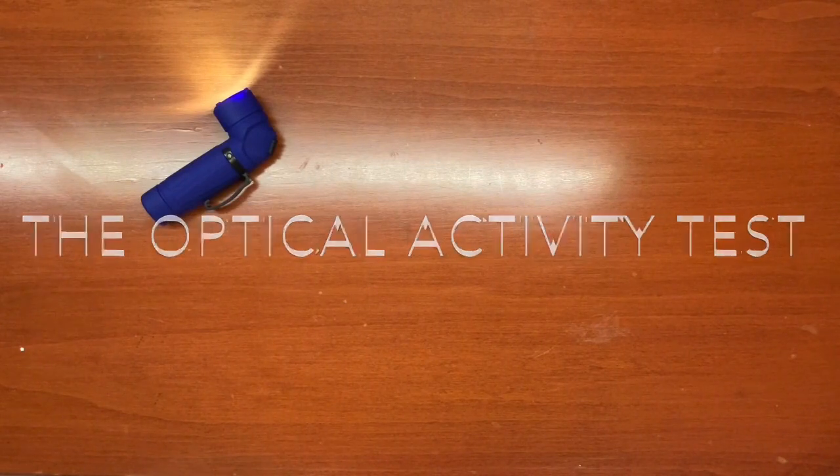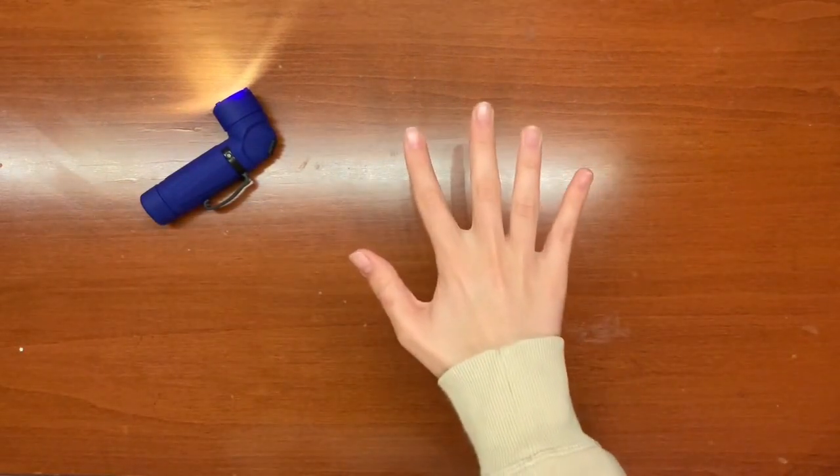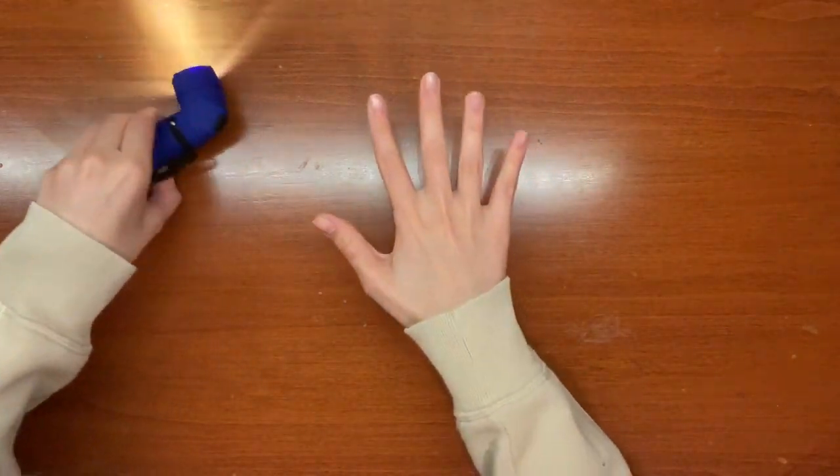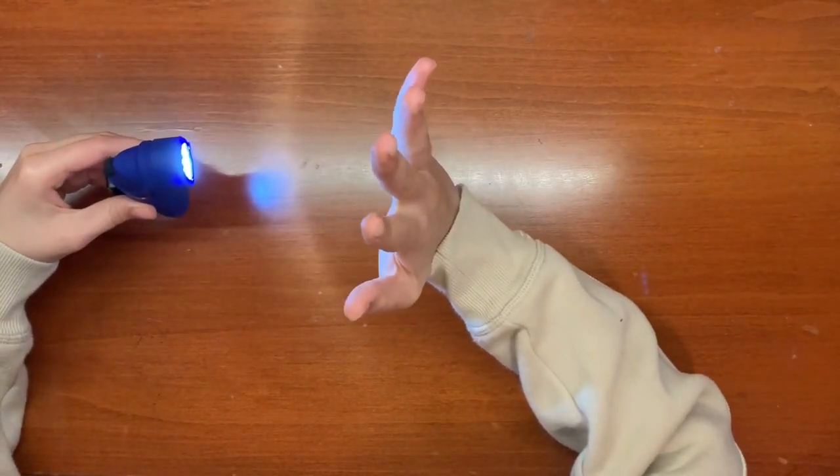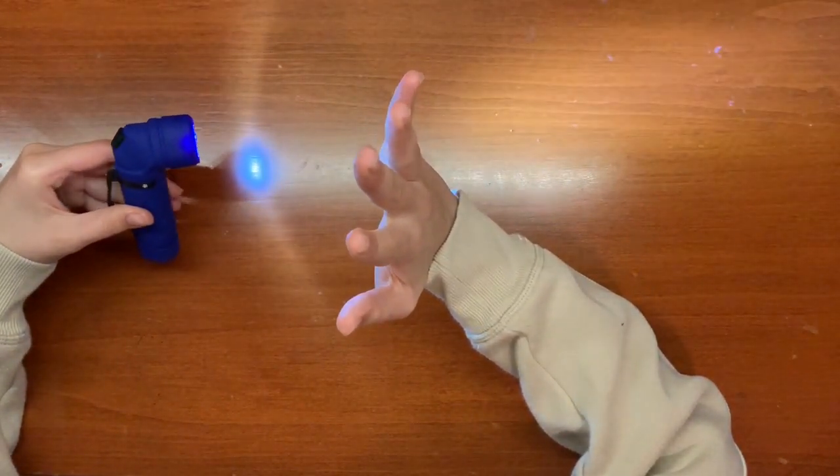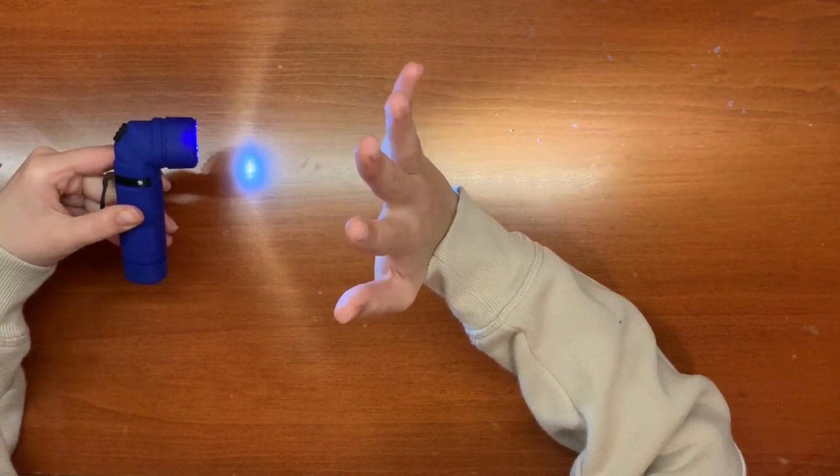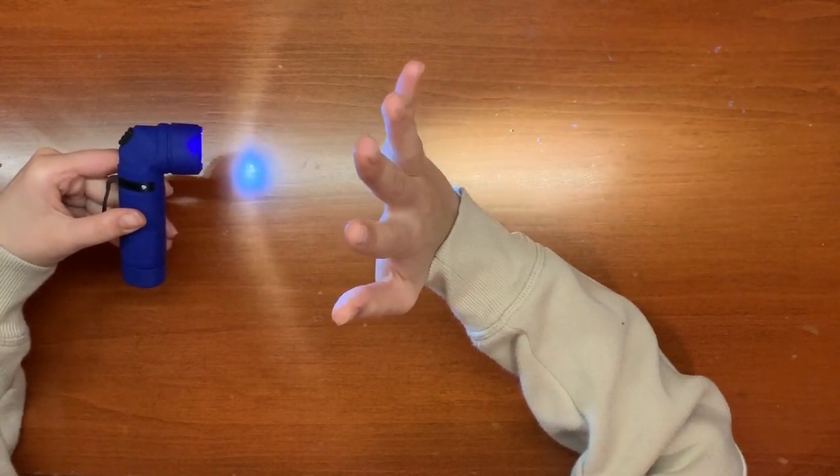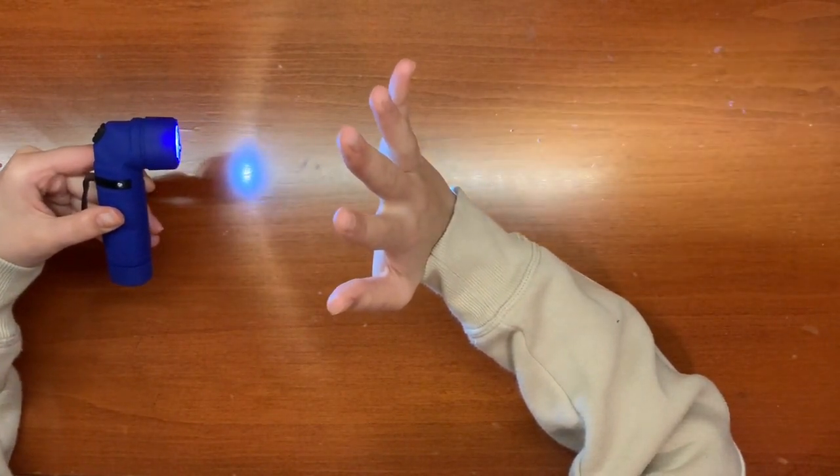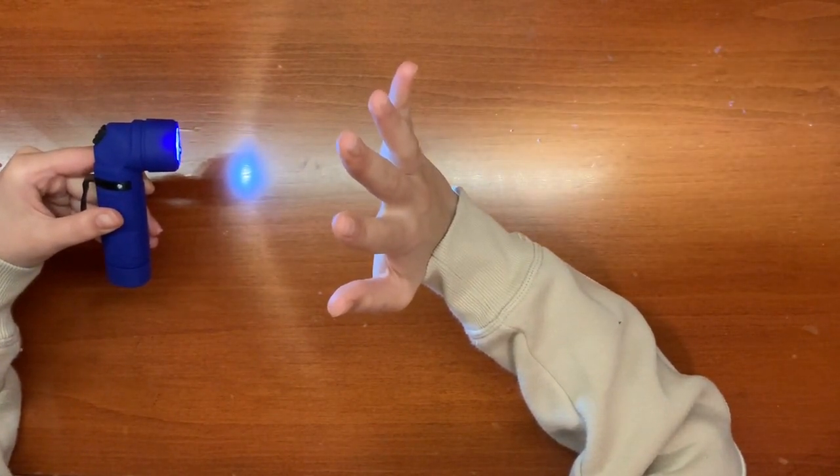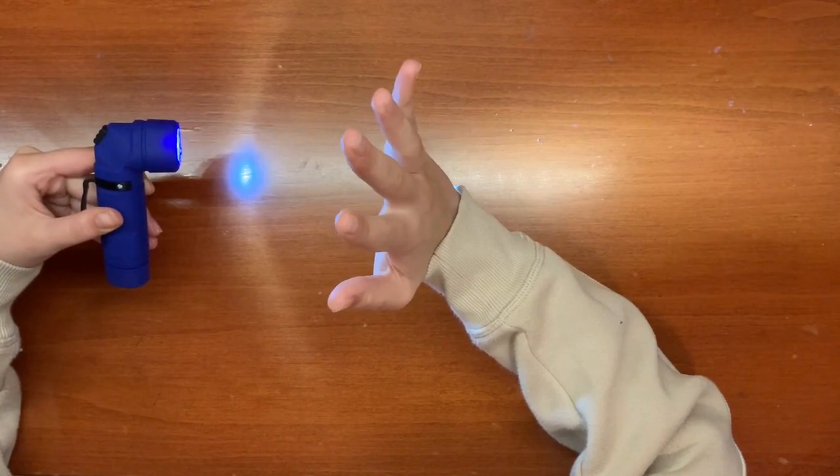Next on the list is optical activity. If I obtain a pure sample of my right hand and I expose it to plane polarized light, I will notice that my right hand will rotate this plane polarized light in a specific direction by a specific angle that's unique to my right hand. This will tell me that my right hand is chiral because this unidirectional light is being rotated.